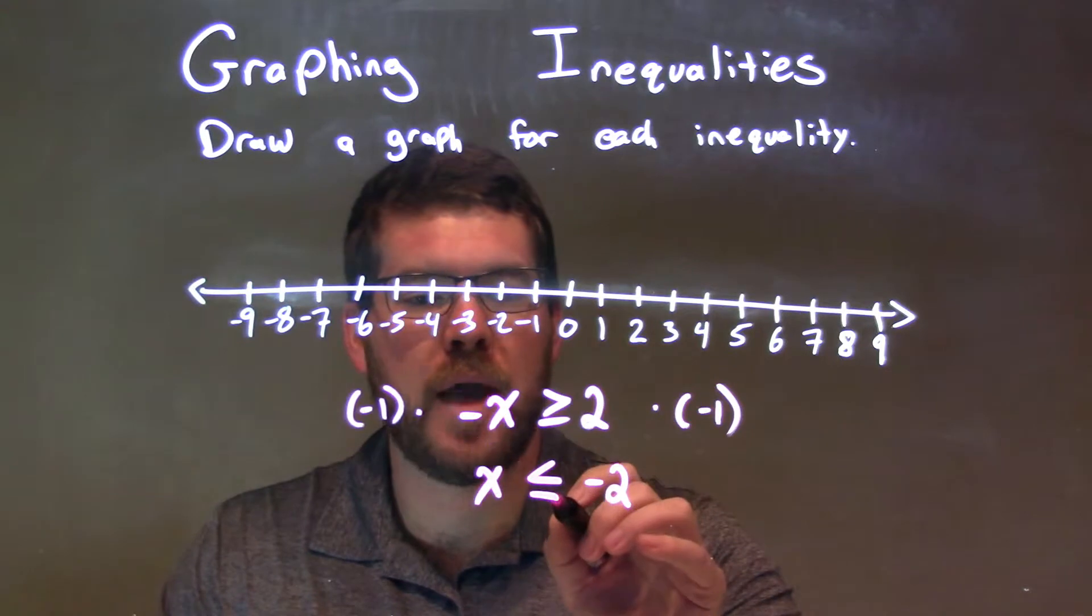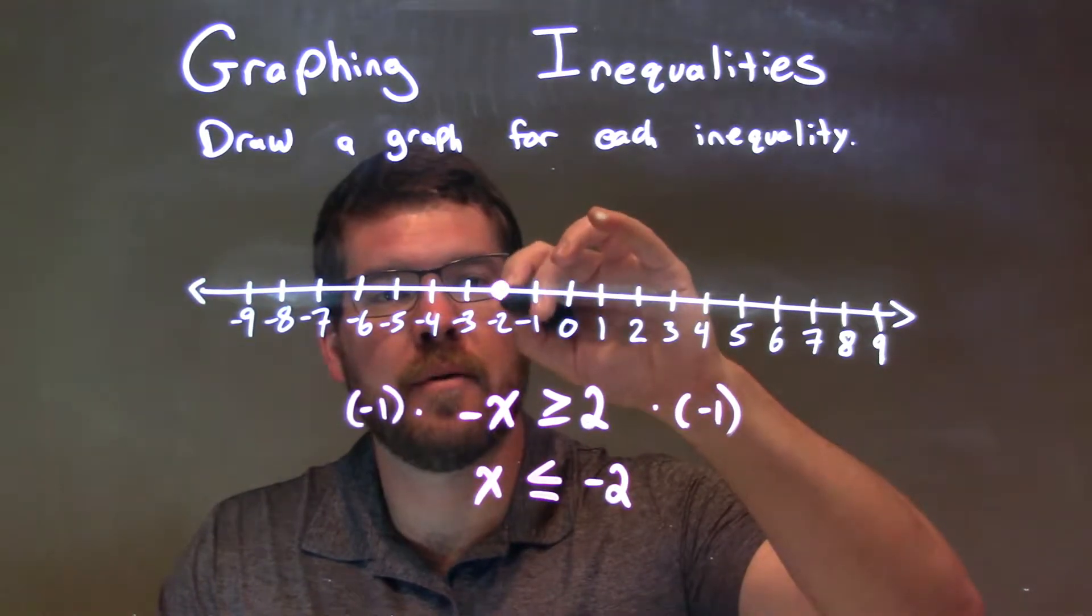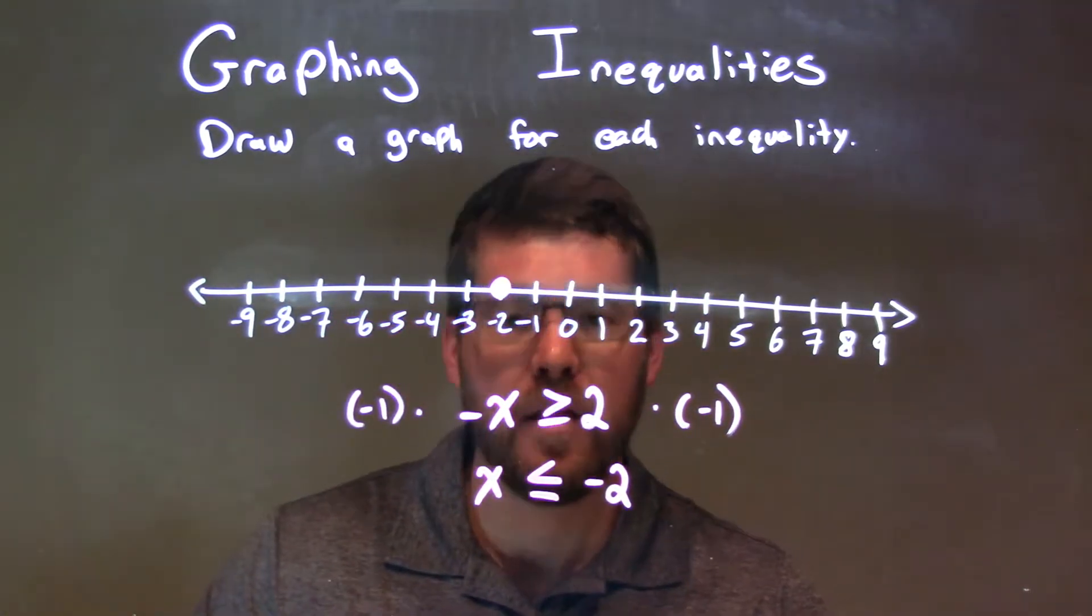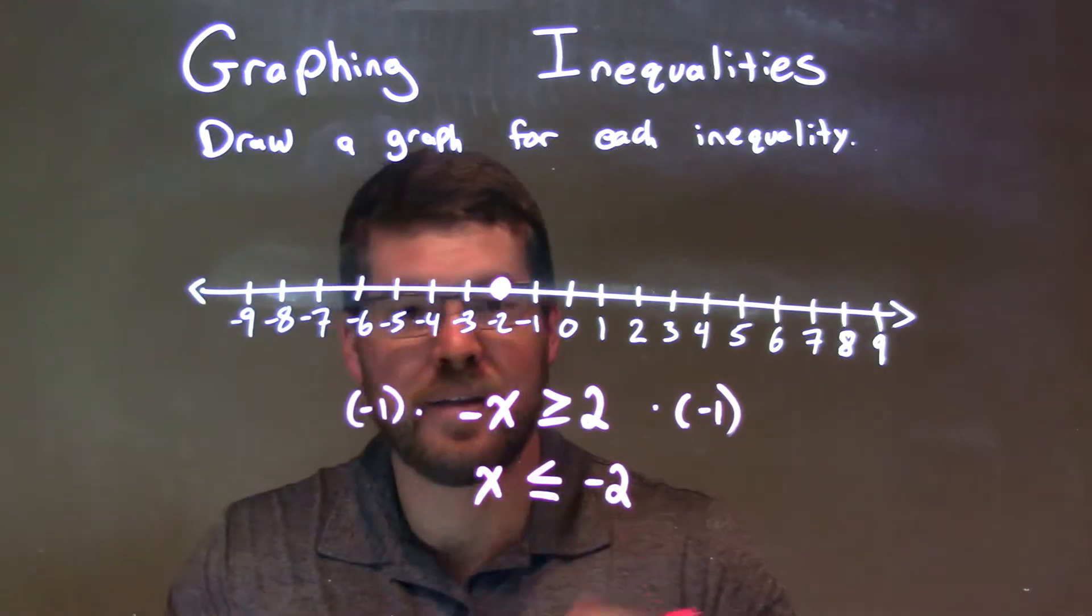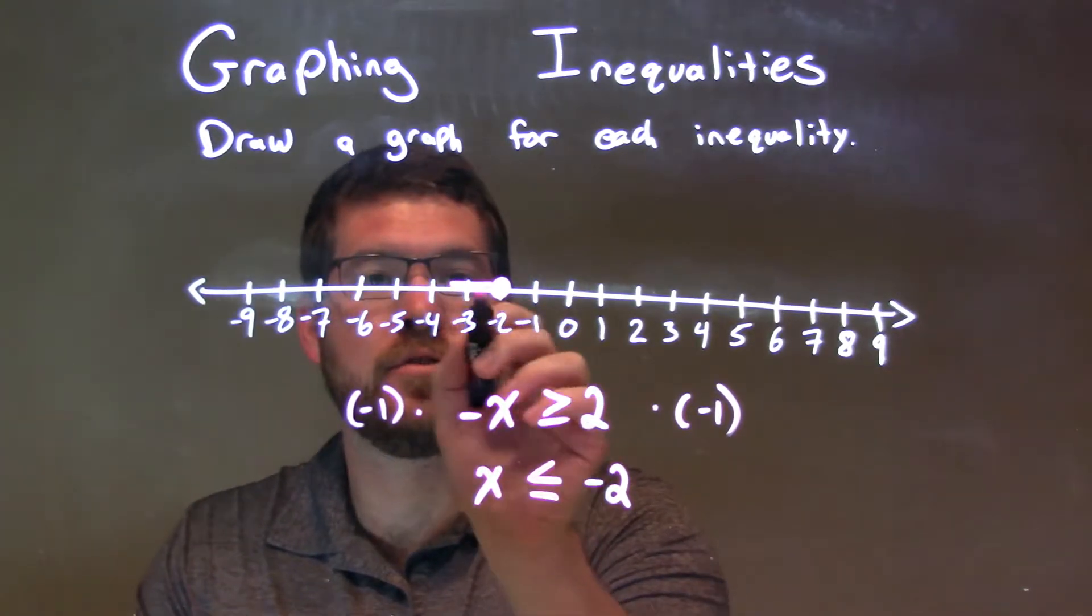So we start at negative 2. x can equal it, so we have a closed circle at negative 2. Then we shade to the left because x is less than negative 2.